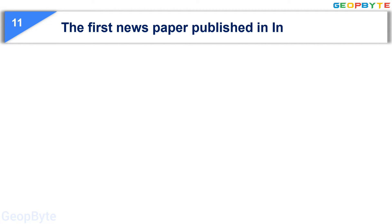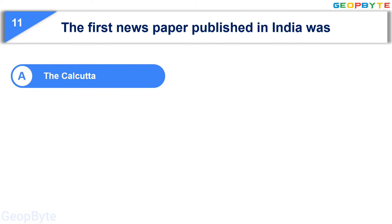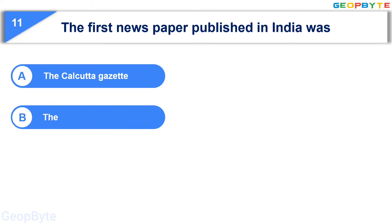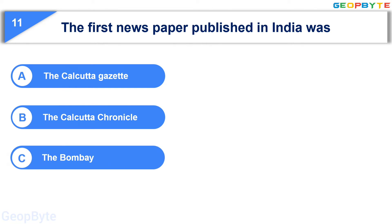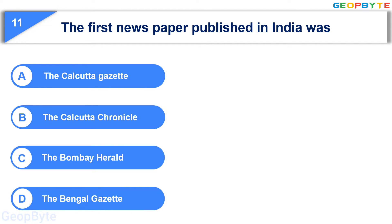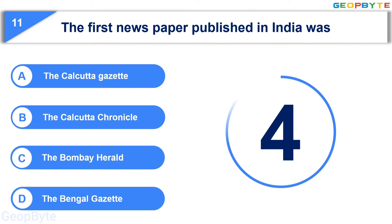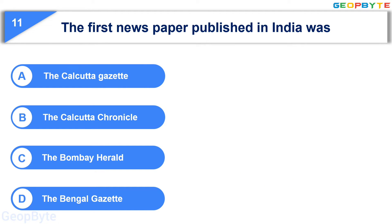Moving to the eleventh question: the first newspaper published in India was — Option A: The Calcutta Gazette, Option B: The Calcutta Chronicle, Option C: The Bombay Herald, Option D: The Bengal Gazette. Your time starts now. Your time is up and the correct answer is Option D: The Bengal Gazette.